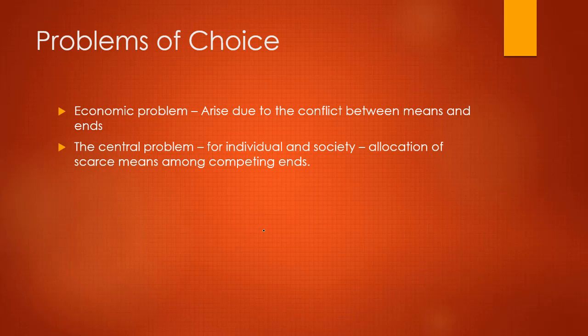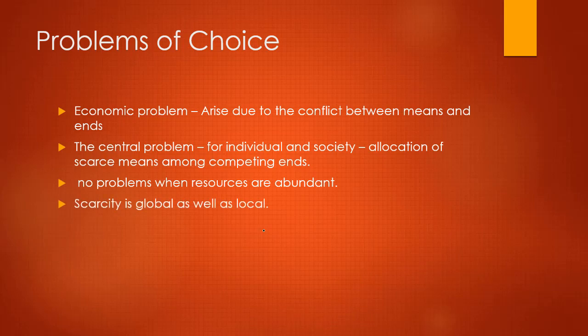This is where the PPC — production possibility curve — comes in. The PPC solves three main central problems of the economy, which we will talk about later. If resources were abundant, there would be no central problems in the economy, but that is not possible. Scarcity can be said to be both global and local.